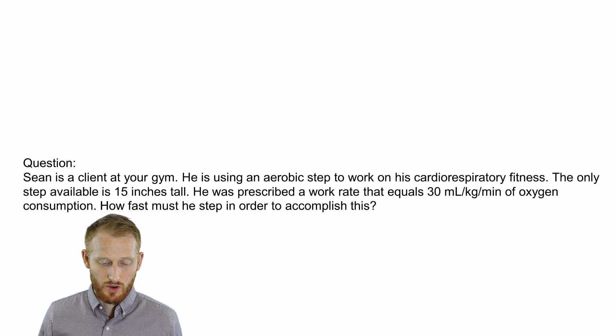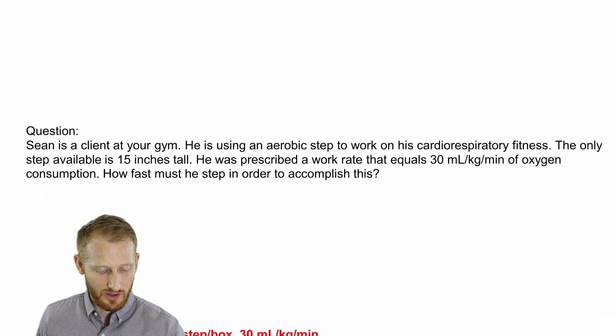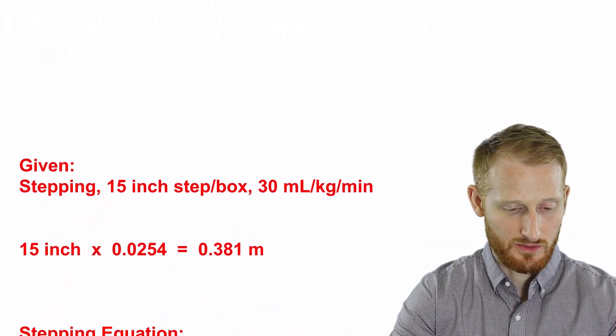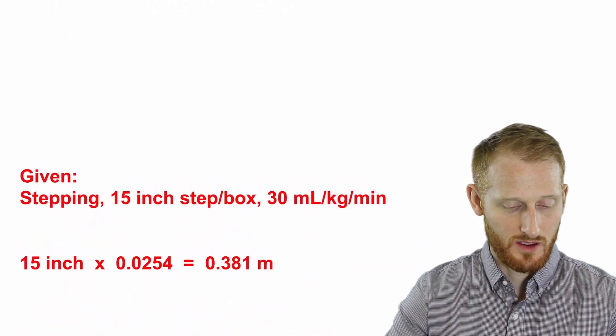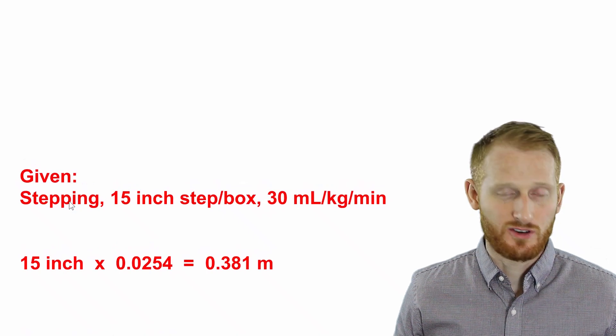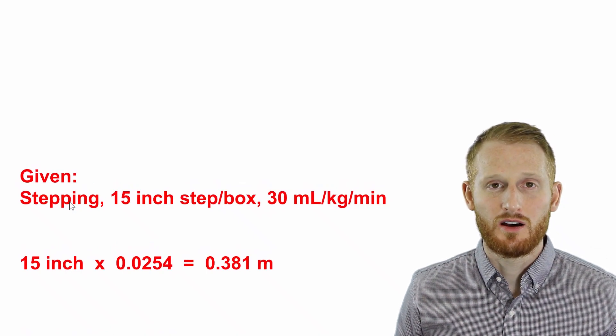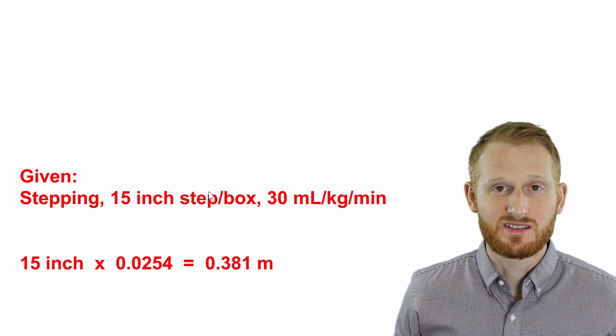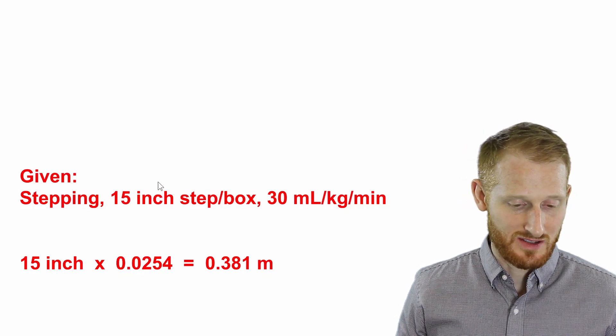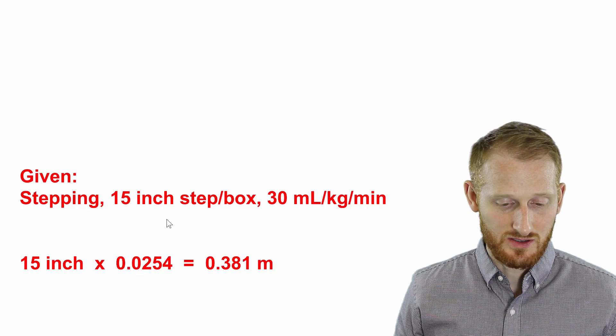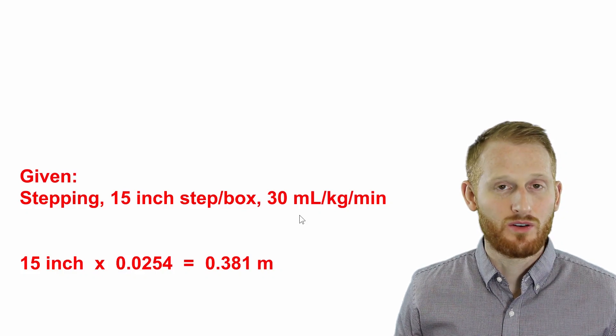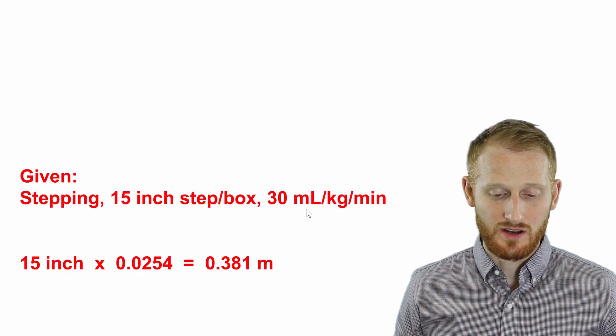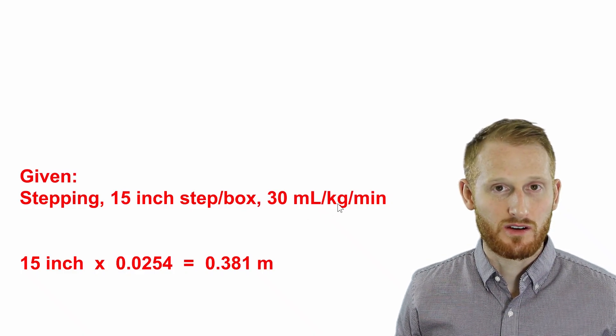Alright, so we have some known variables here. The exercise that is going to be done is stepping, which is important for determining the appropriate equation to use. We know the height of the step or the box is 15 inches tall. And we know the oxygen consumption rate that he needs to reach, which is 30 milliliters of oxygen per kilogram body mass per minute.